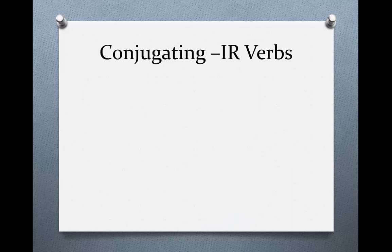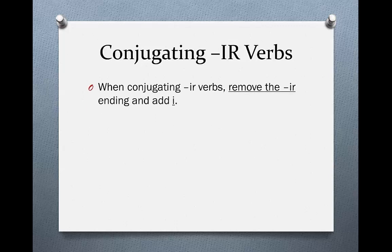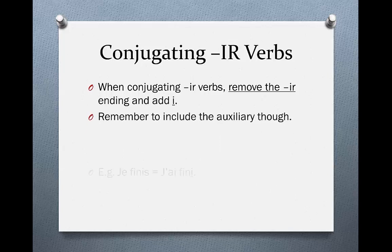How to conjugate IR verbs. All we have to do is remove the -ir and add -i, and we do have to include the auxiliary verb. So, for example, finir becomes j'ai fini. Remember, in the present tense we have je finis, but when we conjugate it into the passé composé, it becomes j'ai fini — that j'ai is the present tense conjugation of avoir.